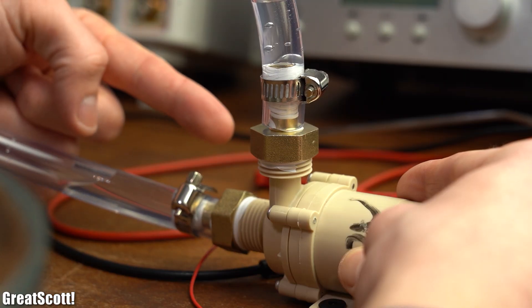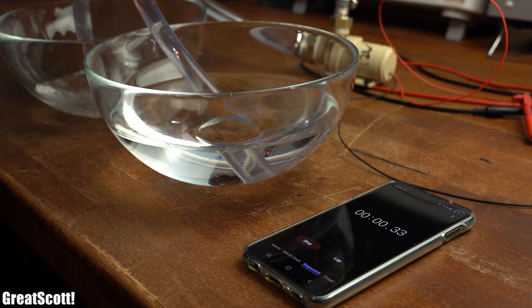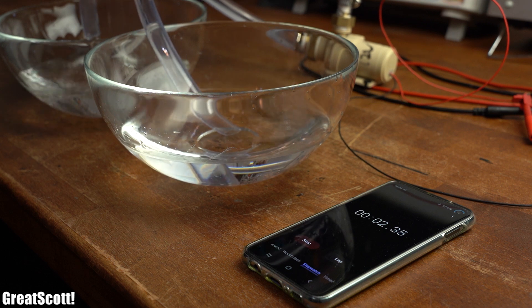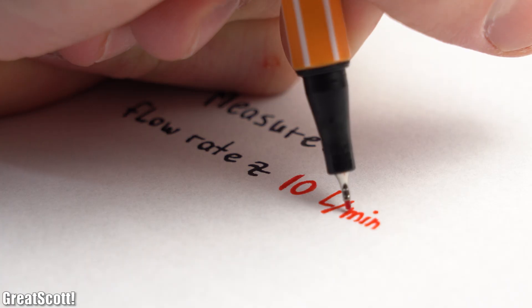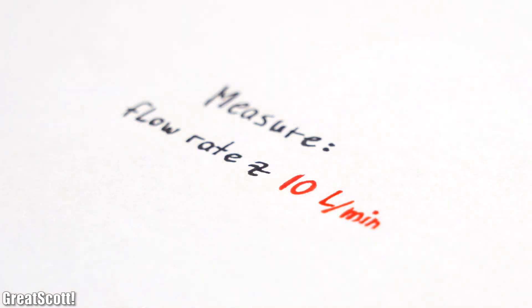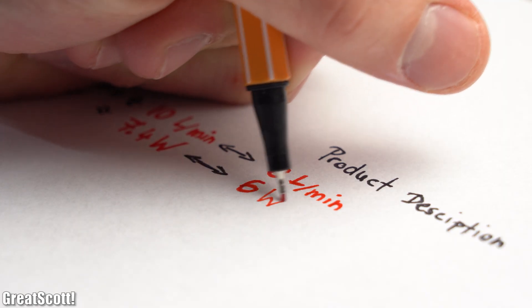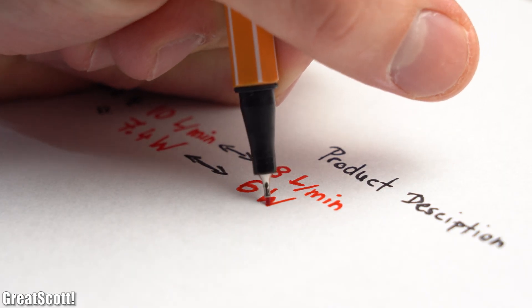And it seems like the water can only enter this way and exit this way. Now after doing some more or less scientific measurements, I calculated an average flow rate of around 10 liters per minute at an average power draw of around 7.4 watts, which means that the product description was pretty accurate.